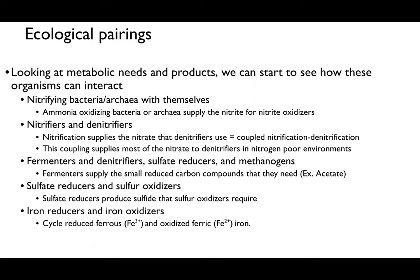Looking at ecological pairings, we consider metabolic needs and products to see how organisms interact and organize. For instance, nitrifying bacteria and archaea pair with themselves: nitrification is split between ammonia oxidation and nitrate oxidation, so these bacteria and archaea essentially organize so that when one generates a byproduct it is sent to the other, forming a coupled cycle. We also have nitrifiers paired with denitrifiers, which is a really important pairing.